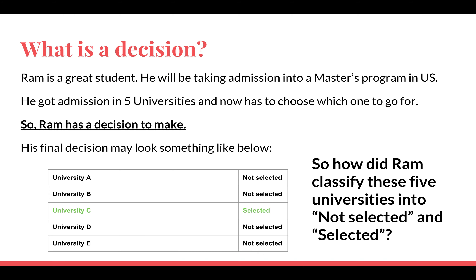Before we look at the intuition behind how decision trees work, let's understand what a decision is. In our day-to-day life we make so many decisions — some are smaller, maybe about what movie to watch, what food to order, or what book to read, and some can be big life decisions. Smaller decisions can be taken pretty fast by our brain, whereas bigger decisions can take days or months.